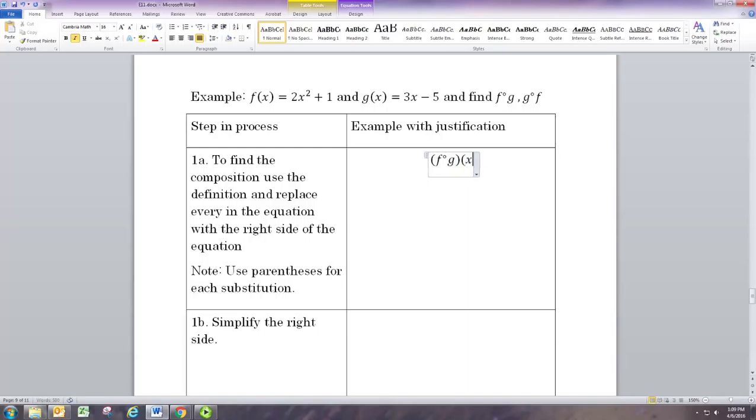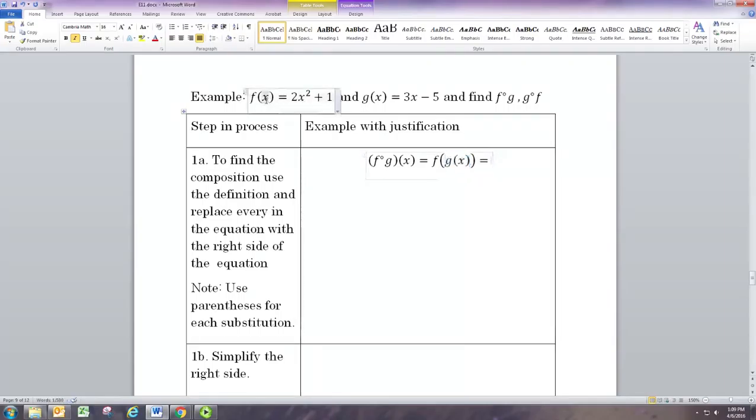Now, I have the little degree symbol here. Typically, that circle is sort of a little lower, right about midway between the top and bottom of the letter. But I couldn't find the correct symbol, so I'm using the degree symbol. So what is this notation f circle g?